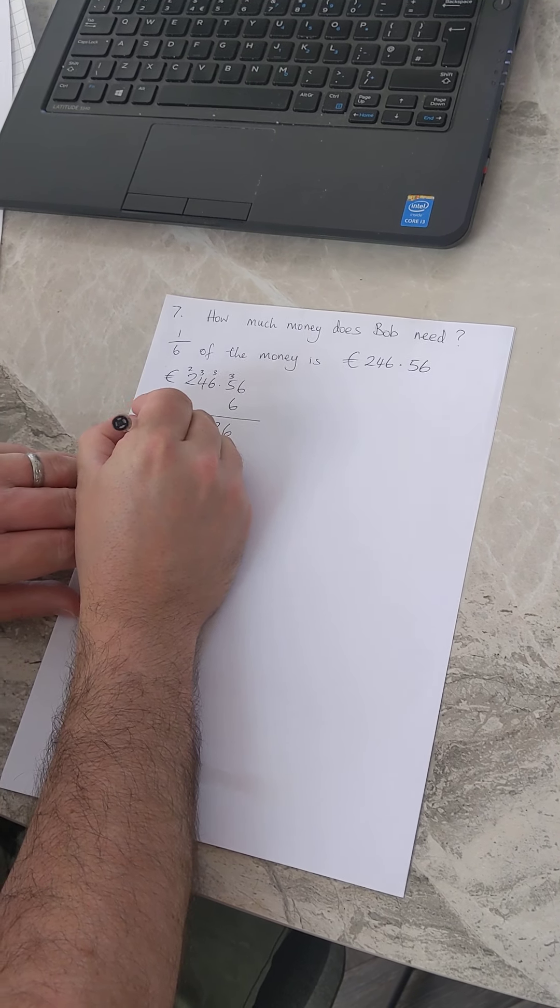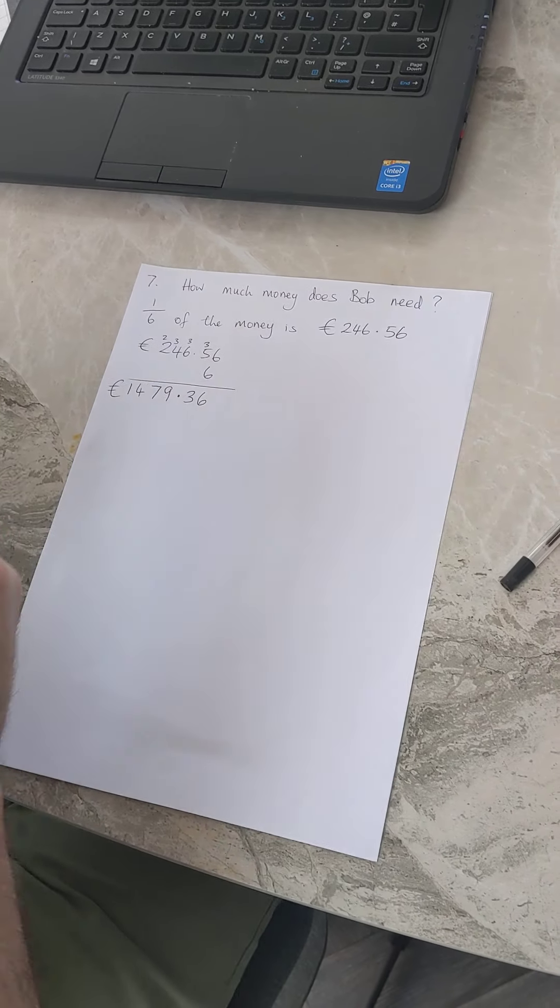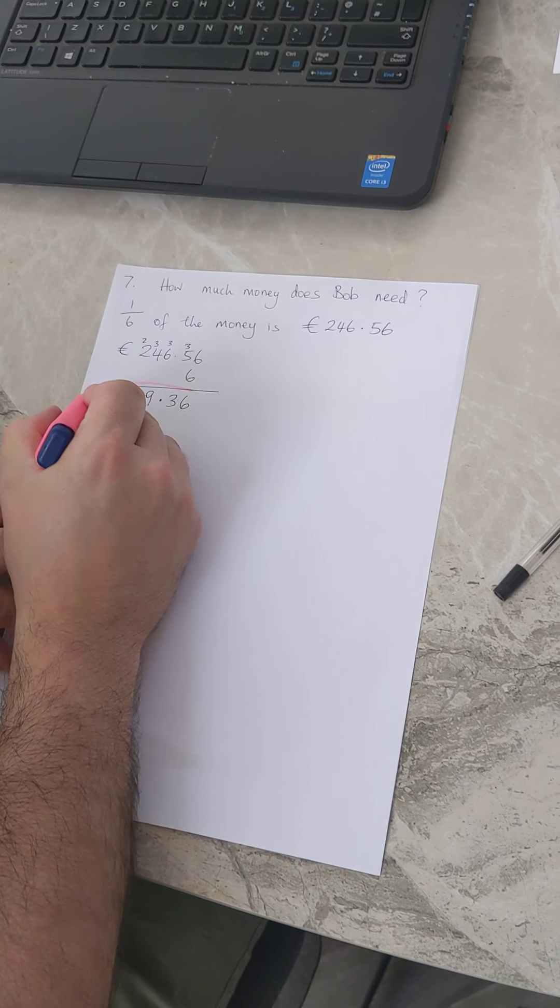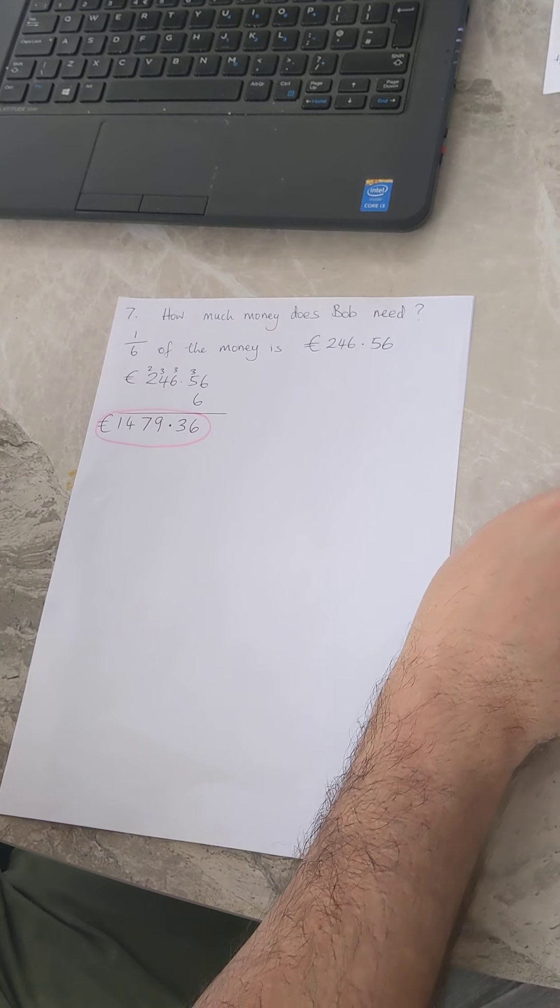So okay, the cost of Bob's building project altogether is this number here: 1479 euro 36 cent.